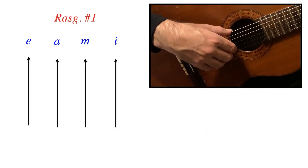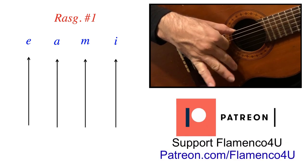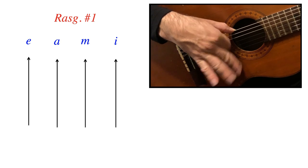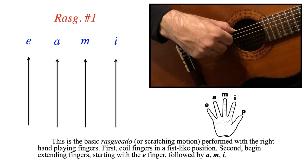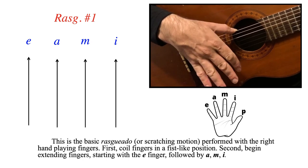The first rasqueado is all downward: E, A, M, and I. Notice how I have all my fingers coiled to start, and then sequentially each one comes down on its own independently.